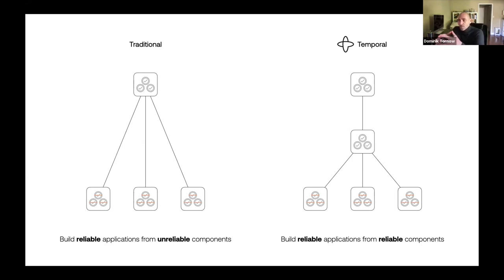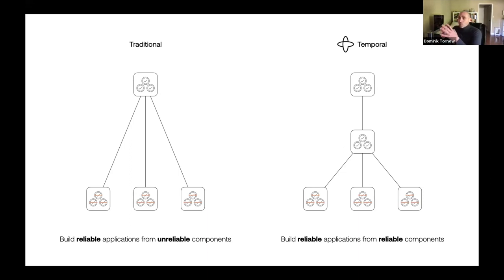With Temporal, we are responsible for composing unscalable and unreliable components into scalable and reliable components. From there, you compose already scalable and reliable components into scalable and reliable systems - a much less daunting task. Temporal detects and mitigates load and failure for you, ensuring your application is scalable and reliable by construction. This is Temporal's core use case backed by at least a decade of distributed systems theory and practice.